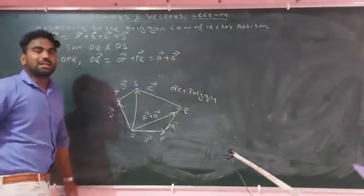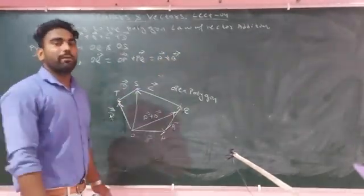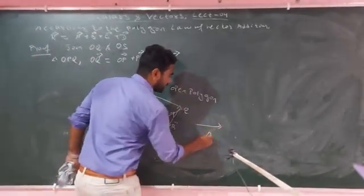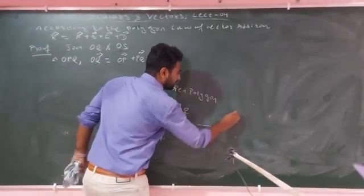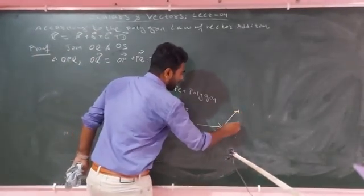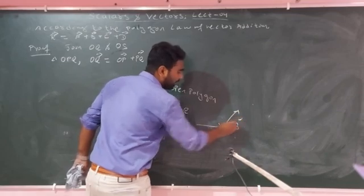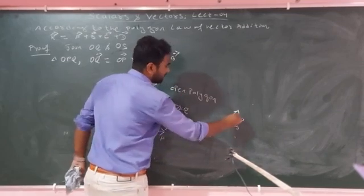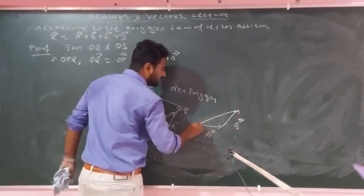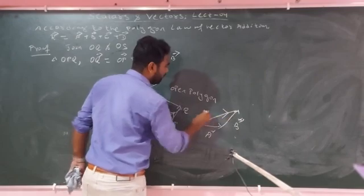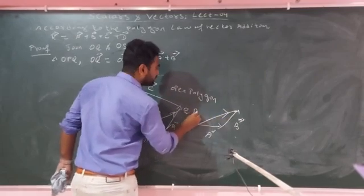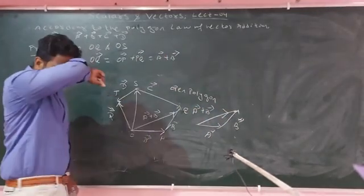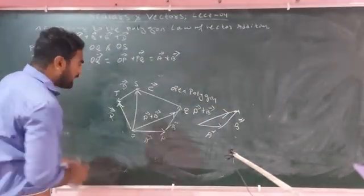This is the triangle of the vectors. The head-to-tail connection gives us the resultant. The result is the size of A plus B vectors.